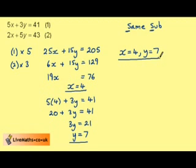We should check these in our original equations. 5 times 4 plus 3 times 7 is 20 plus 21, which is 41.